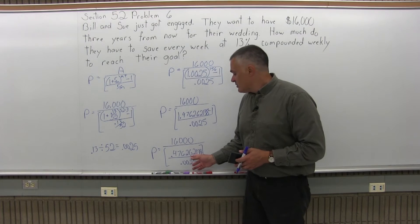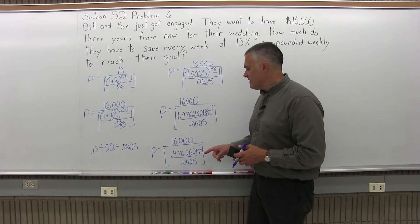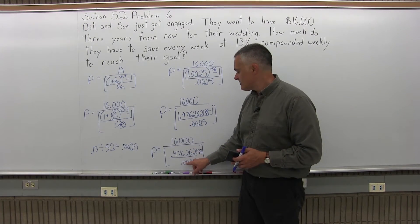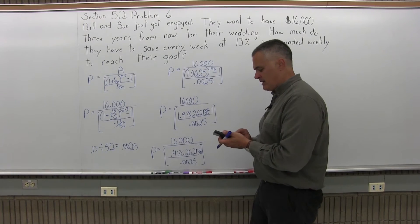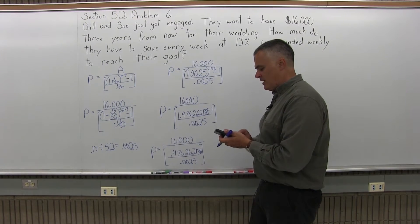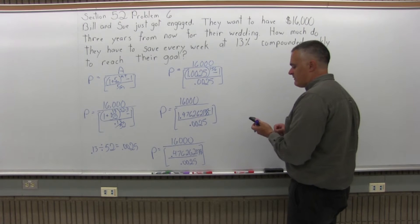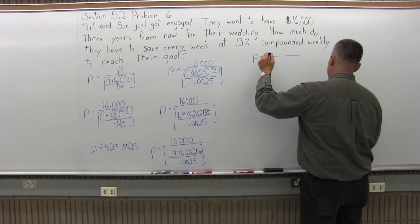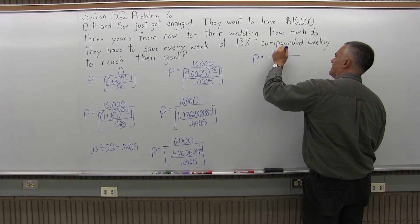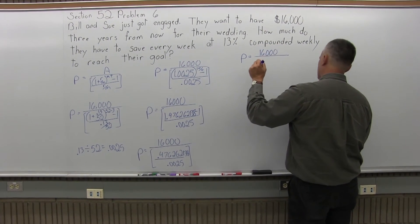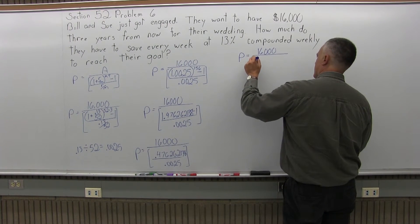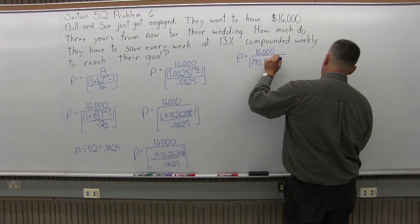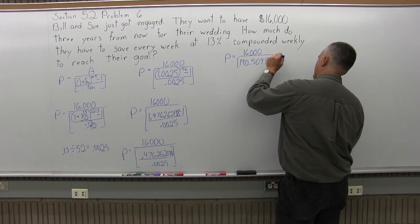So now if I do a division, the brackets will have one number in them. If I divide 0.476262138 divided by 0.0025, my brackets will have one number in it, and that one number will be 190.5048554. So my formula will say P equals, and I'll have a fraction, and the top of the fraction is 16,000. And in the denominator of the fraction, I have some brackets with a number, 190.5048554.